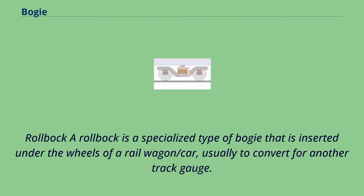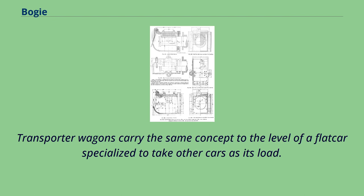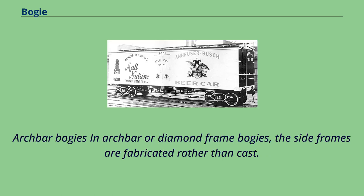A rollbock is a specialized type of bogey that is inserted under the wheels of a rail wagon or car, usually to convert for another track gauge. Transporter wagons carry the same concept to the level of a flat car specialized to take other cars as its load. In archbar or diamond frame bogeys, the side frames are fabricated rather than cast.